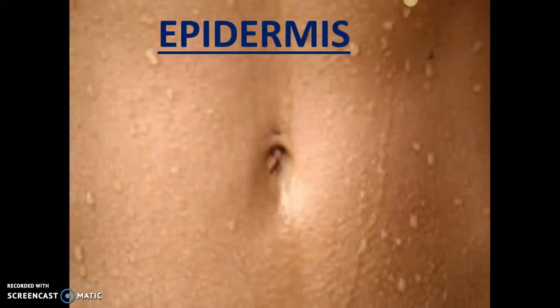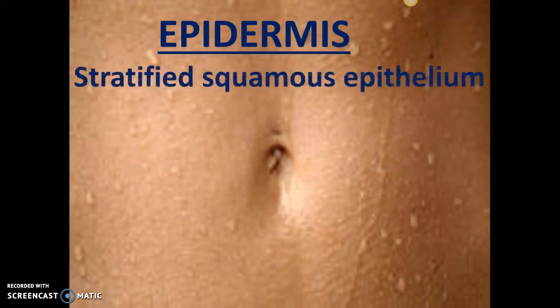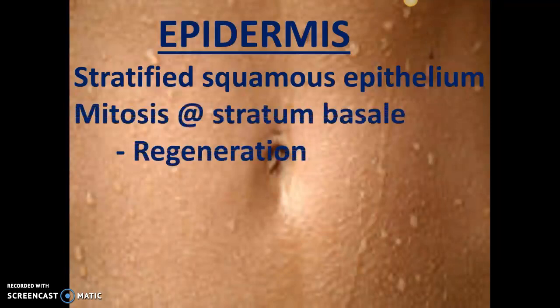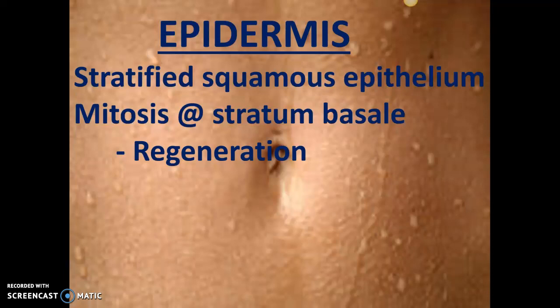The epidermis, the top layer and the thinnest layer, is made mainly of stratified squamous epithelium. What you're looking at is someone's belly button, and even the belly button — all the skin you see is stratified squamous epithelium. Mitosis is constant at the stratum basale, your base layer. Stratum basale literally means base layer. You've got constant regeneration of stratified squamous epithelial cells there; as they go to the top, they flatten out and slough off.